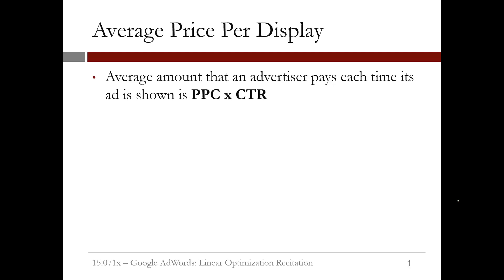In the previous video, we introduced the concepts of price per click and click-through rate. Once we know both of these quantities, we can calculate the average price per display. This is simply the average amount an advertiser pays when a user is shown their ad. We can compute this by multiplying the price per click with the click-through rate.